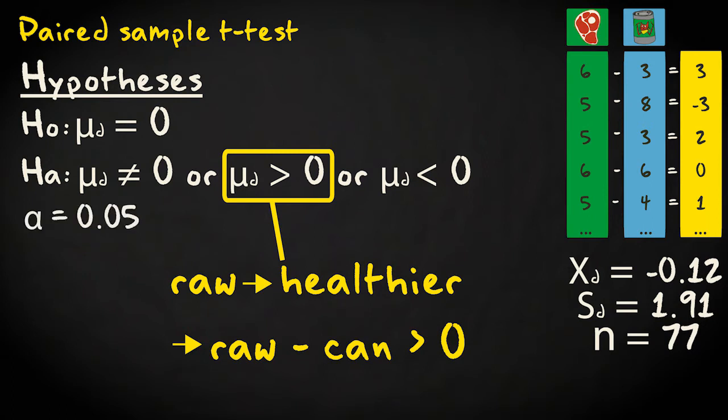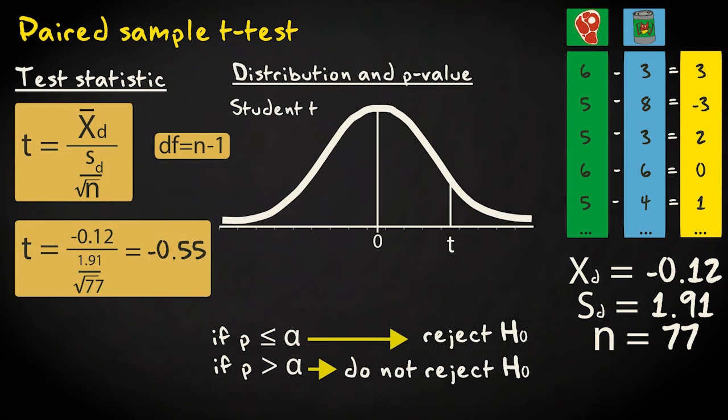I set the significance level to 0.05. The test statistic value is minus 0.12 divided by 1.91 divided by the square root of 77, which equals minus 0.55.